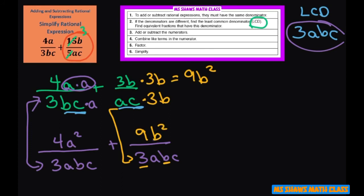What we have is 4a squared plus 9b squared divided by 3abc. And that's it. Thank you. Have a nice day. Bye bye.